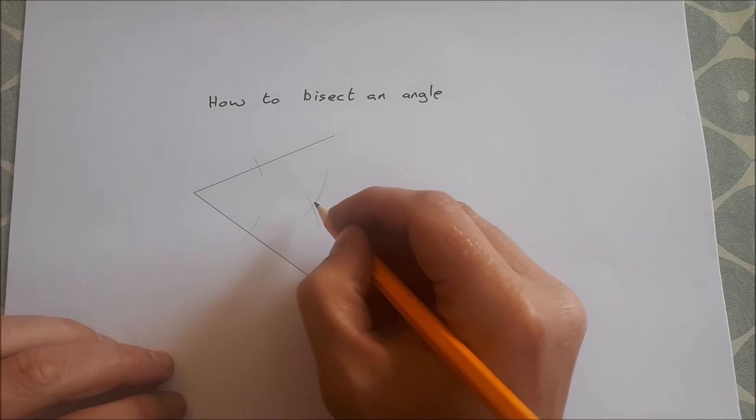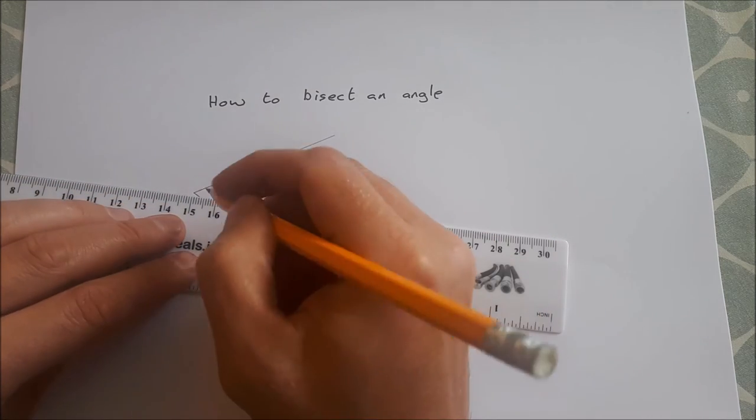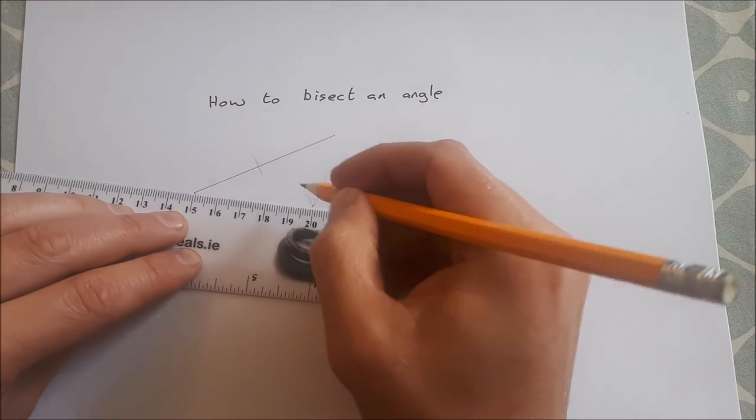You get the point of intersection of the two arcs and you join that using a ruler to the point or the vertex of the angle.